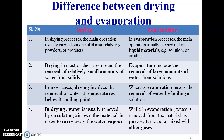In drying and evaporation, in both processes we are removing the water, but there is a difference between these two processes. The first comparison point: in the drying process, the moisture is removed from the solid material, that means wet material. And in evaporation, the moisture or water is removed from the liquid material, that is a solution. The next comparison point: drying means removal of a relatively small amount of water from the solids, and in evaporation we remove a large amount of water from the solutions.